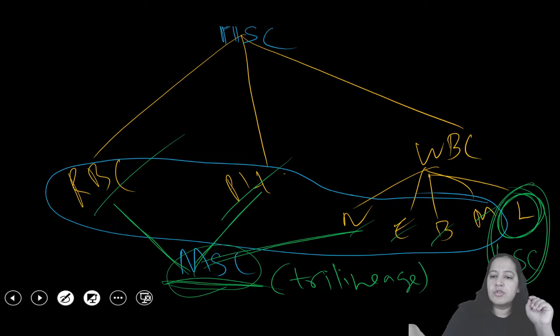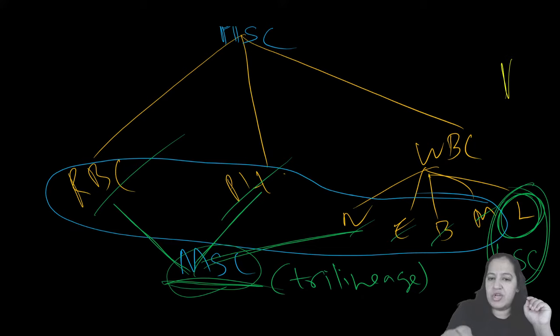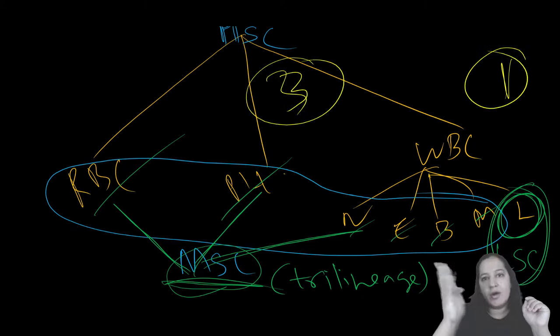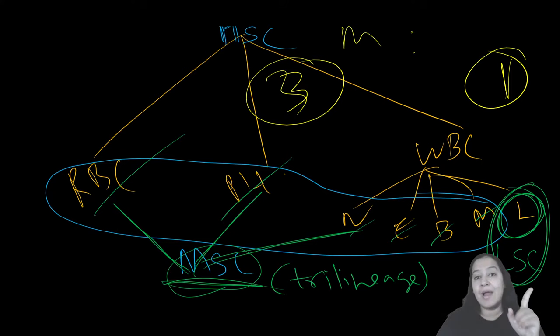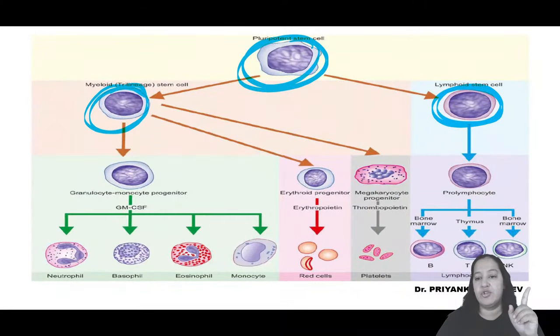The ratio between the two series in bone marrow is 3:1. Because myeloid series is forming three things and lymphoid series is forming one thing, the myeloid-to-lymphoid ratio is 3:1. This is the normal myeloid-to-lymphoid ratio - an important MCQ point.